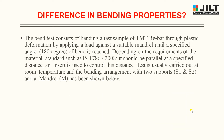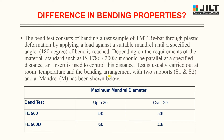Now let us see the main difference in bending properties. The bend test consists of bending a TMT rebar sample through plastic deformation by applying a load against a mandrel until a specified angle of 180 degrees is reached. As per IS 1786-2008, the test is carried out at room temperature with two supports S1 and S2. For FE500, the mandrel diameter is 4d for bars up to 20mm and 5d for bars over 20mm. For FE500D it is 3d and 4d respectively.